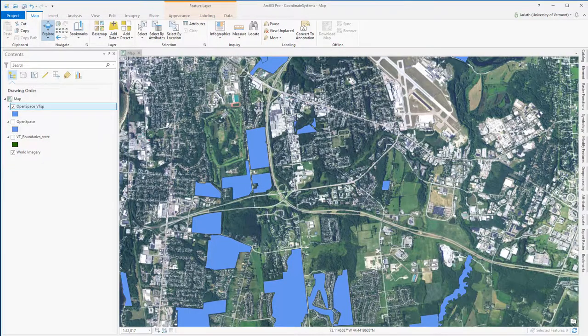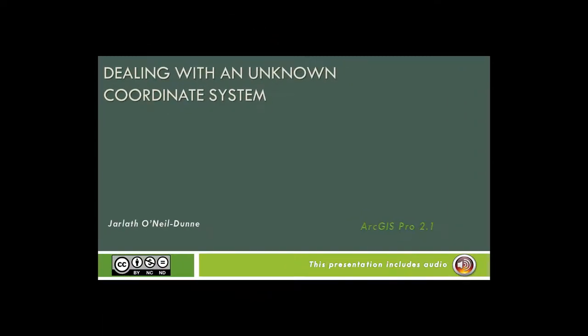In this video we showed you how to deal with an unknown coordinate system. The first thing we did was make sure that we have an ArcGIS Pro project with a reference layer with a known coordinate system — a base map works just fine. Then we continually changed the coordinate system of the map data frame until our unknown layer appeared in the correct location. After it showed up in the correct location, we used the Define tool to define it to the coordinate system we determined it to be in. Finally, and as an optional step, we projected it to a new coordinate system to allow us to make more accurate measurements and integrate it with other data.